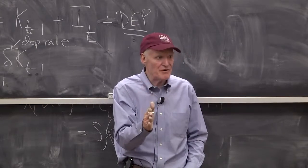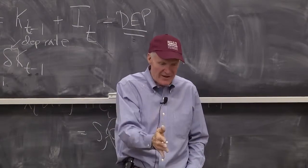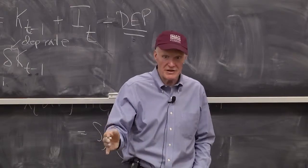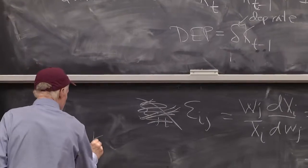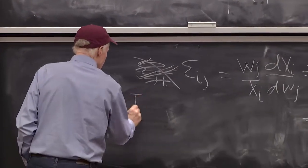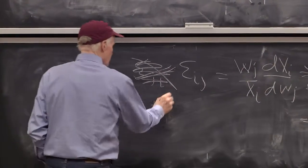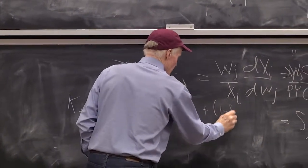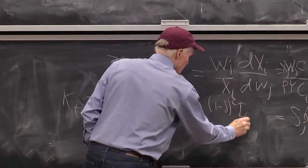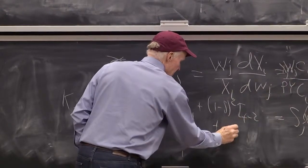There's a single state variable, which is this aggregate of past production. Kt equals It plus (1 minus delta) times It-1 plus (1 minus delta) squared times It-2, and so on.